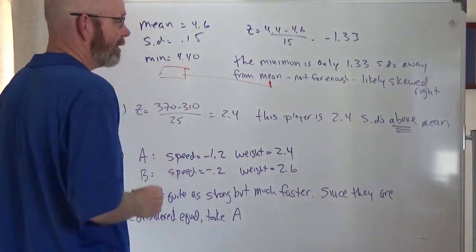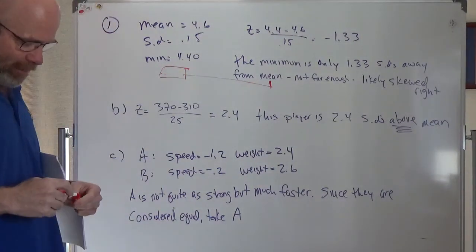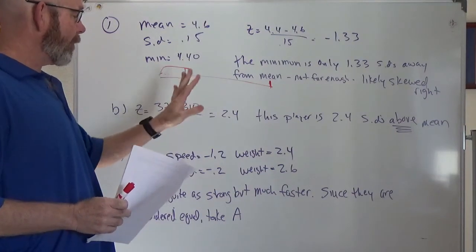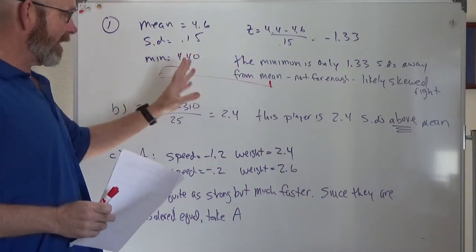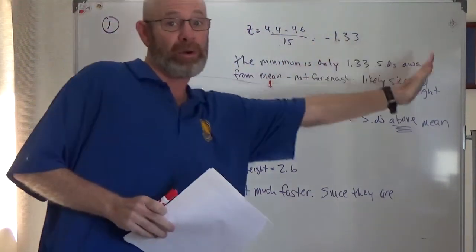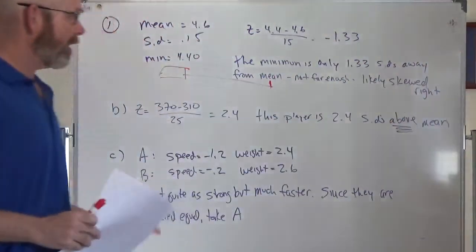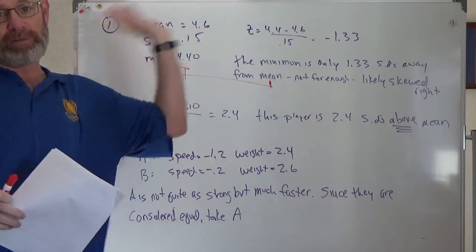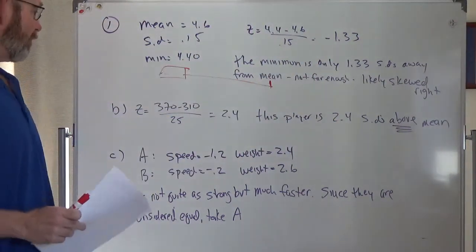It's kind of looking like that. You can think about this also logically, if you're dealing with running, you're going to have a whole bunch of guys in the middle, some fast guys, but then the slower, slower, slower times, you're going to stretch it out more to the right. But the fact that the minimum isn't far enough away leads you to believe there's more on the other side. So it's probably skewed right.